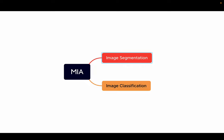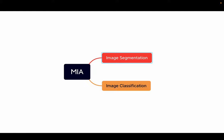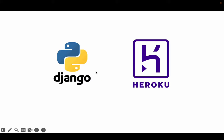My system includes algorithms for two main tasks: image segmentation and image classification. I tested six different models and found the RAS unit to be the best performing model, which I integrated into my system. To make my system accessible and easy to use, I developed a web application using Django.